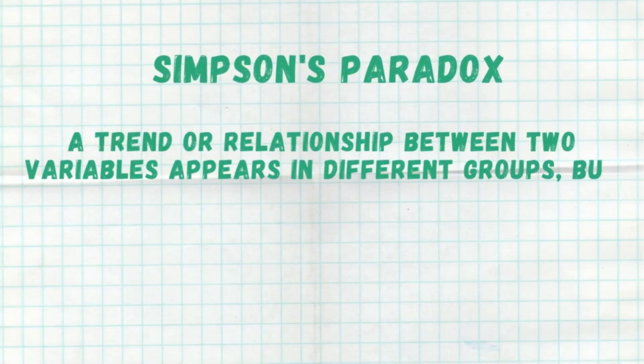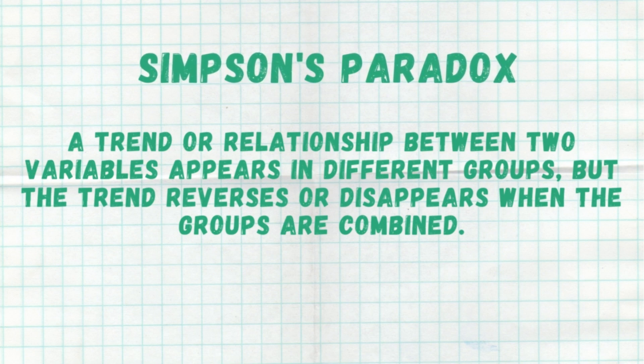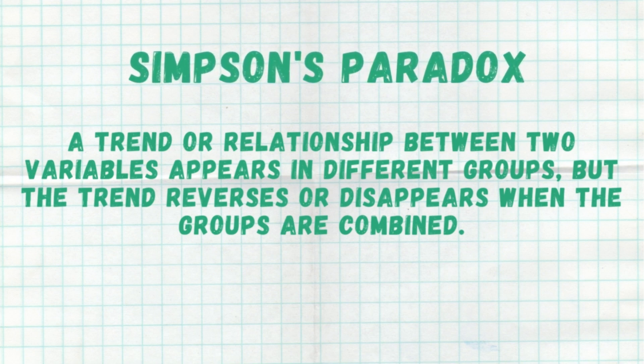Here's the deal. Despite College B having a higher acceptance rate for every single ethnicity, that disappears and reverses when we look at the overall acceptance rates, and now it's second to College A. This is Simpson's Paradox — a statistical phenomenon where we see a trend or an association between two variables when we look at subgroups, but when we look at the overall population of data, it seems to reverse what's happening.